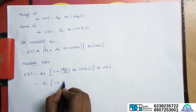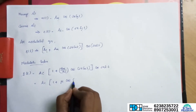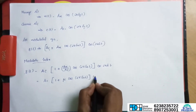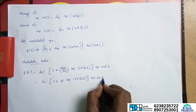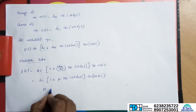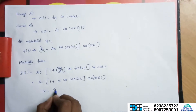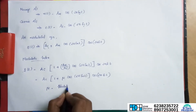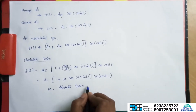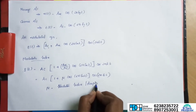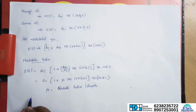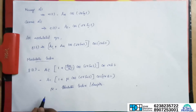This becomes Ac into (1 plus mu cos 2 pi fm t) into cos 2 pi fc t. Here mu is the modulation index, also known as modulation depth.